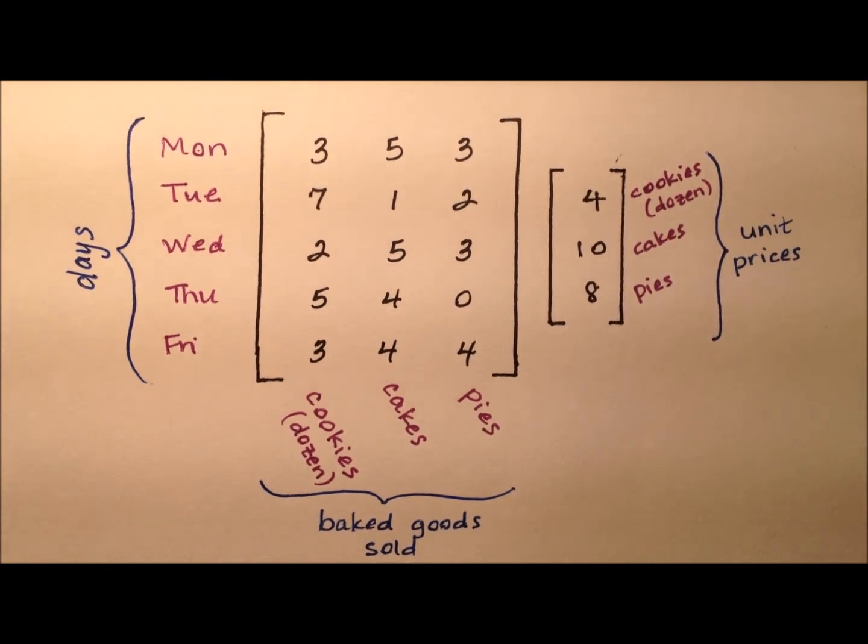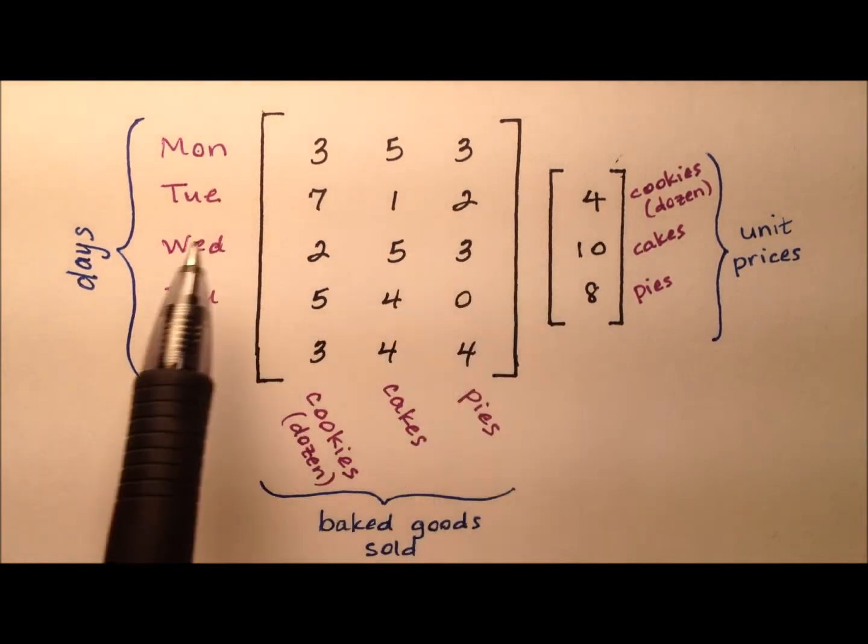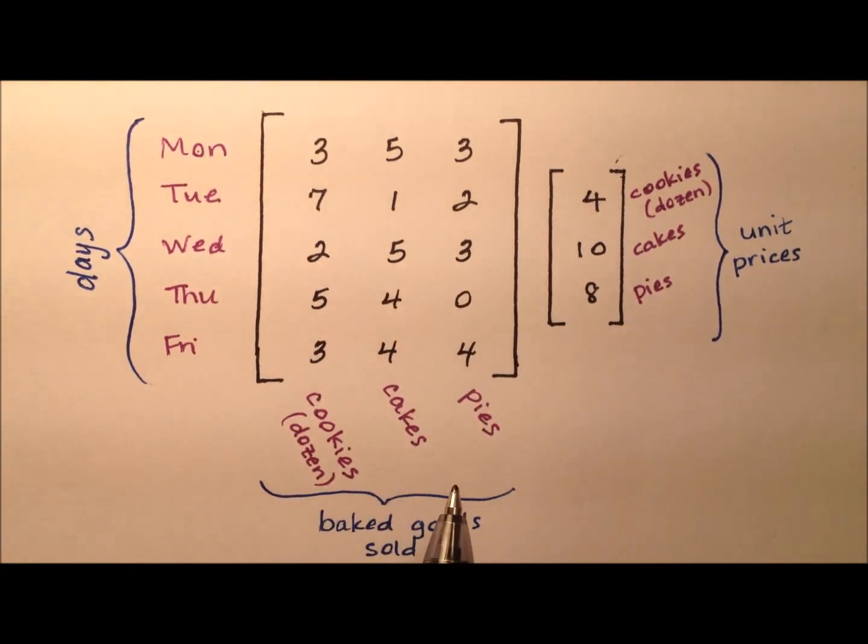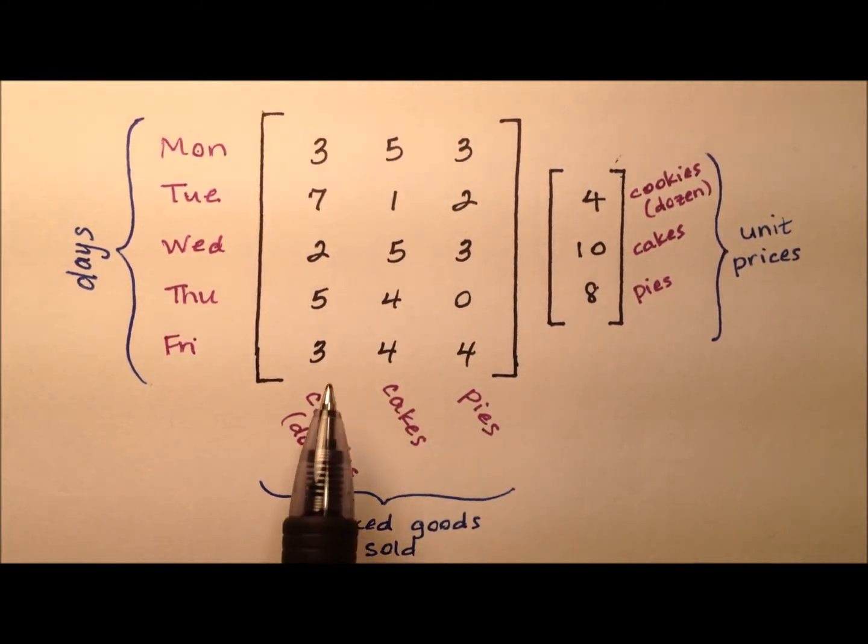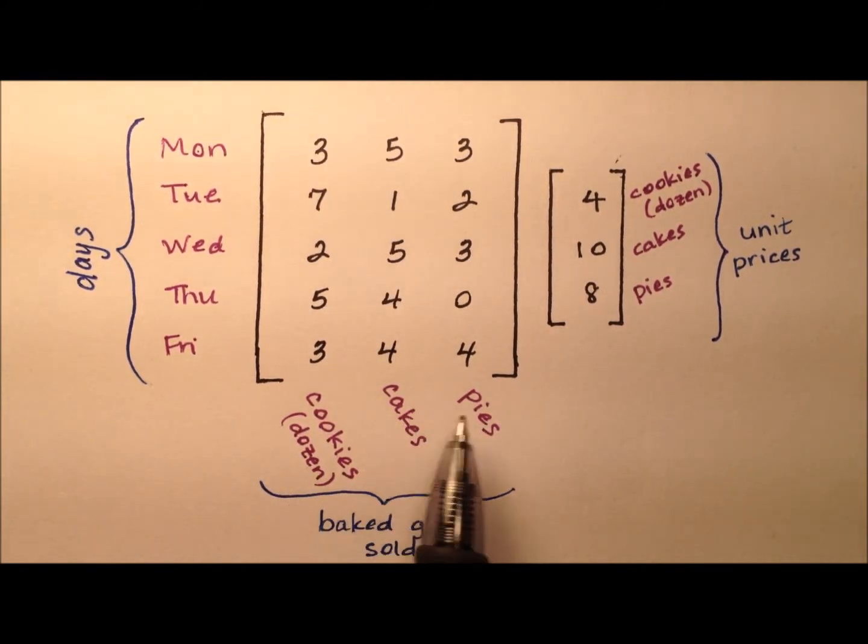It's very practical to store these kinds of data in a matrix, as matrices are essentially table structures. Each row in this matrix will represent a different day, Monday through Friday, and each column in the matrix will represent some of these baked goods sold. So we have cookies by the dozen, cakes, and pies.